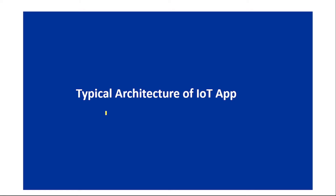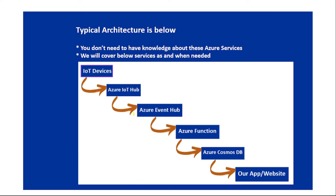In this video, let's discuss the typical architecture of an IoT app. As we can see in this diagram, there are a few Azure services we may use — for example, Azure Event Hub, Azure Function, and Azure Cosmos DB. You don't need prior knowledge of these services; we will cover them as needed, to the point where you can understand a typical IoT application architecture and develop your own IoT application.